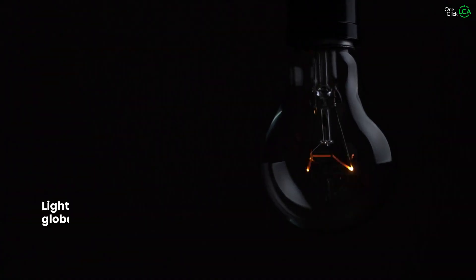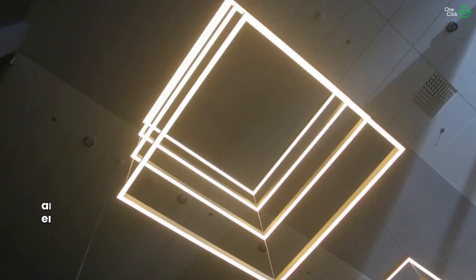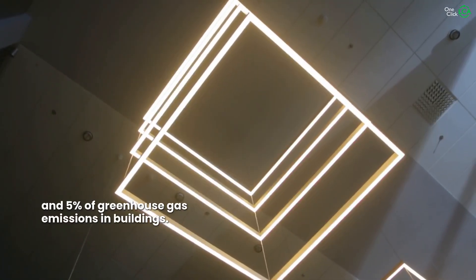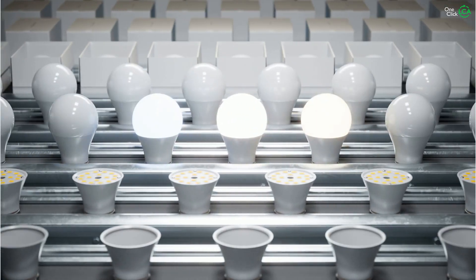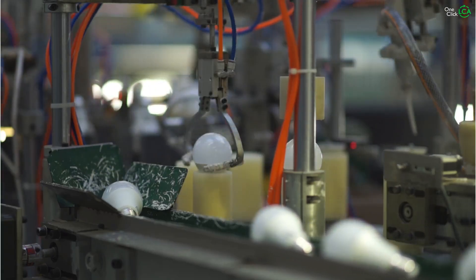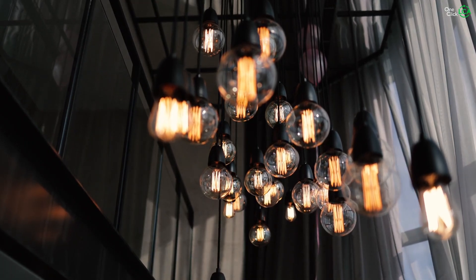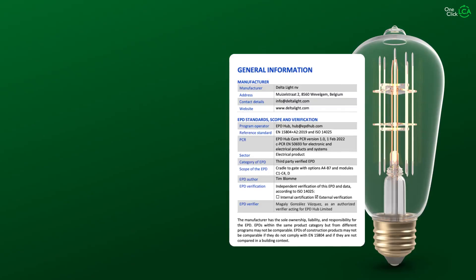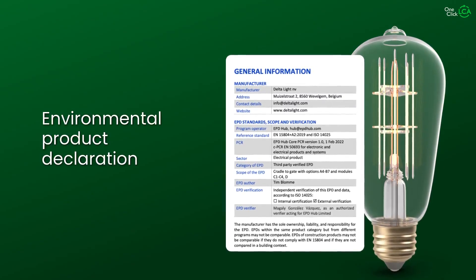Lighting is responsible for 15% of global electricity use and 5% of greenhouse gas emissions in buildings. As a luminaire manufacturer, you can make a real impact on global net-zero targets by designing and producing more energy-efficient products with the help of Environmental Product Declarations, or EPDs.